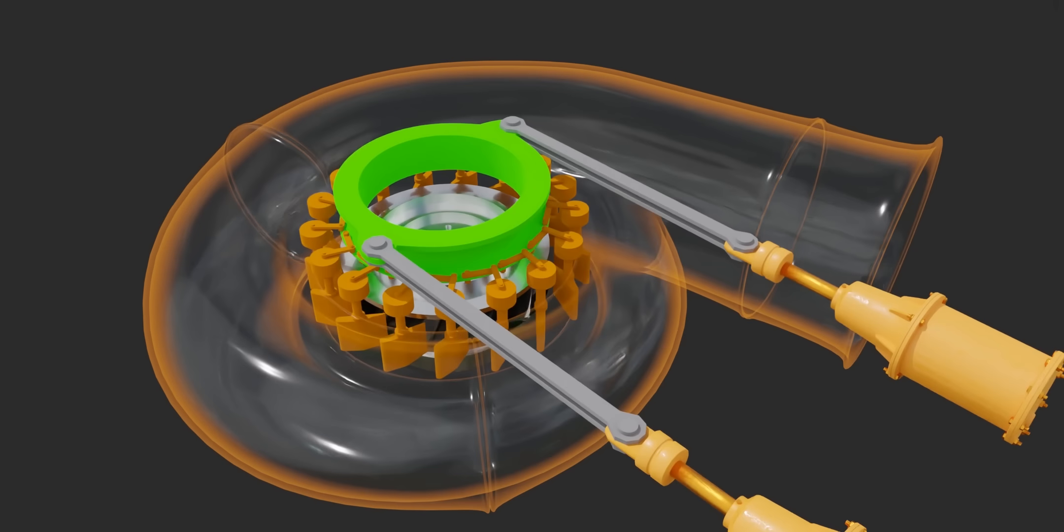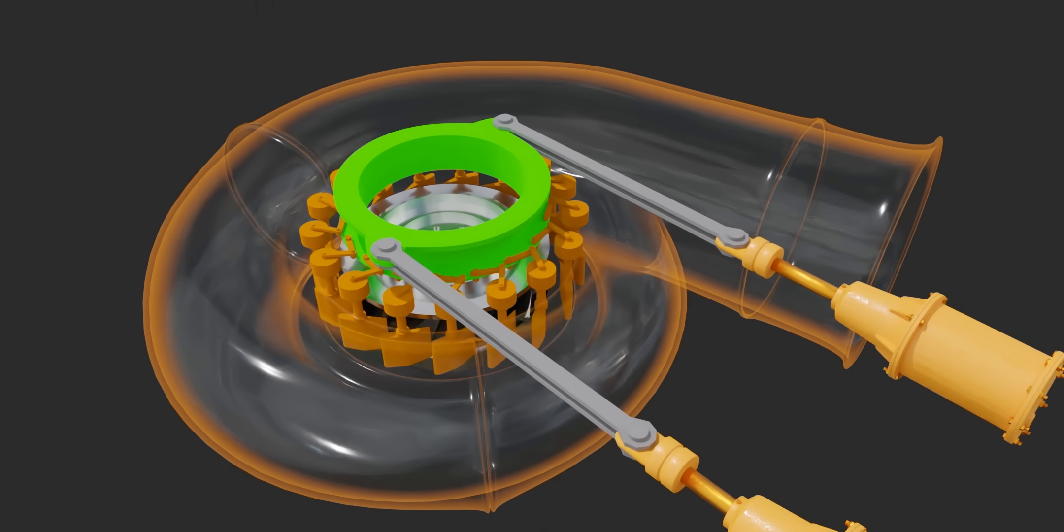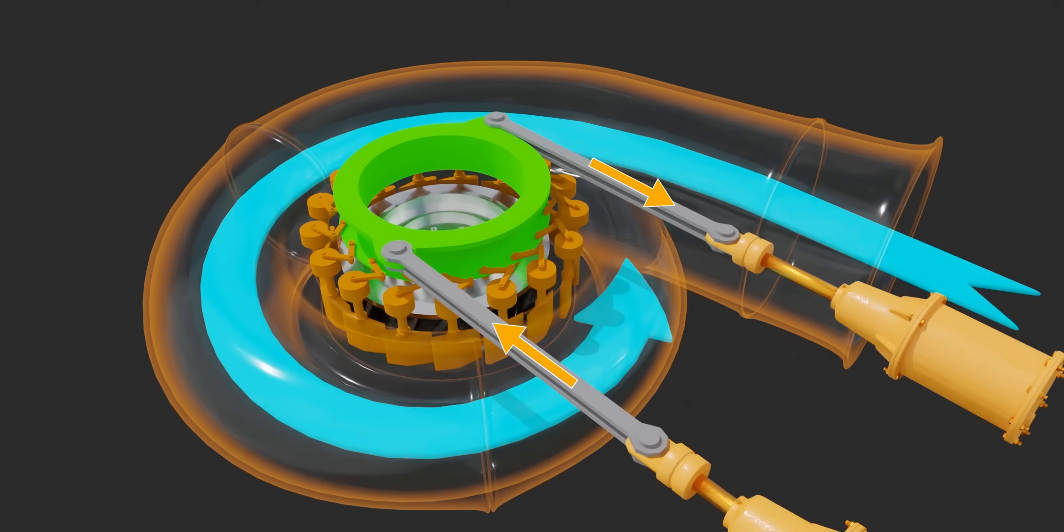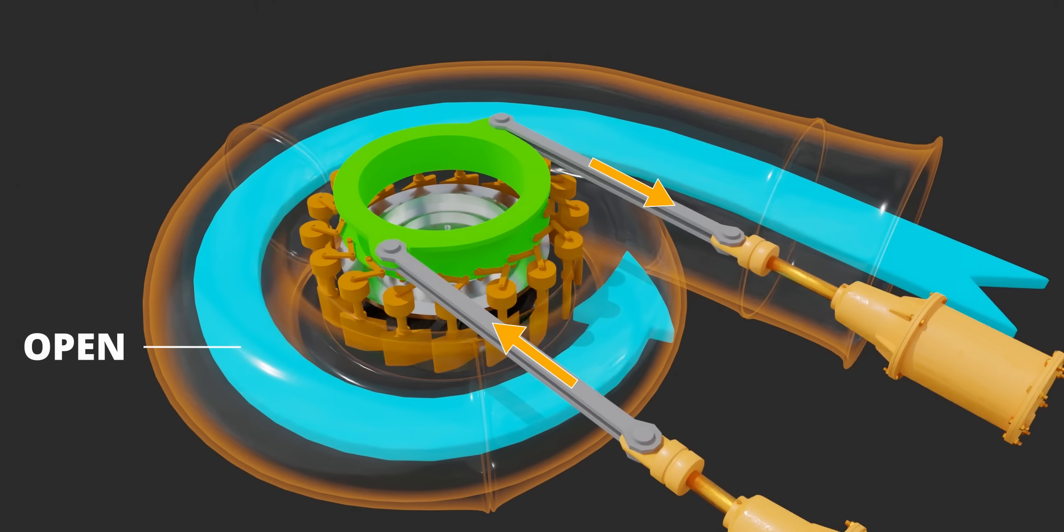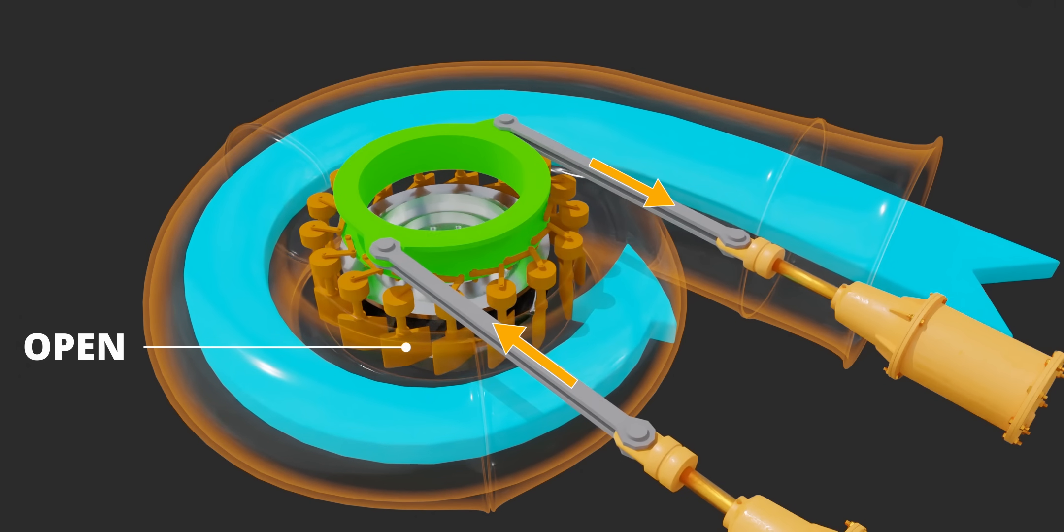The governing mechanism regulates water flow by adjusting the angle of the guide vanes. If the guide vanes are more open, the water flow rate to the turbine will be higher, and thus, more power will be produced.